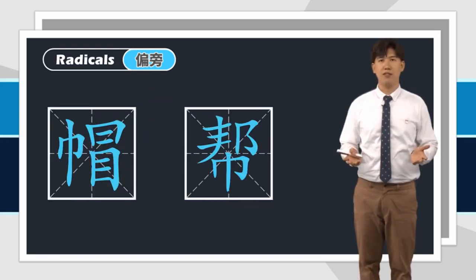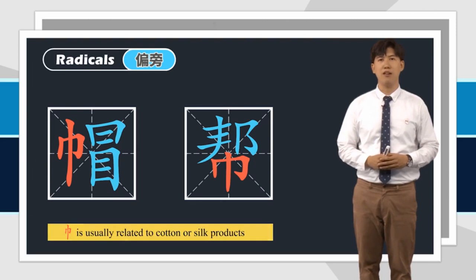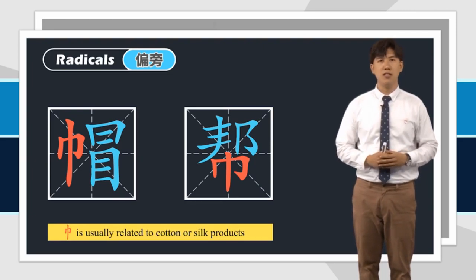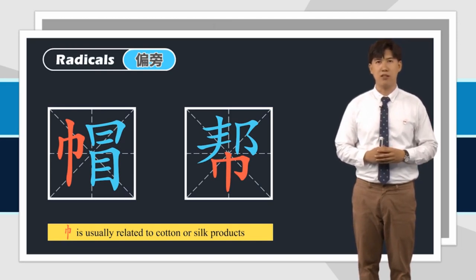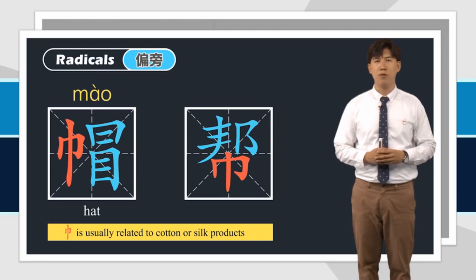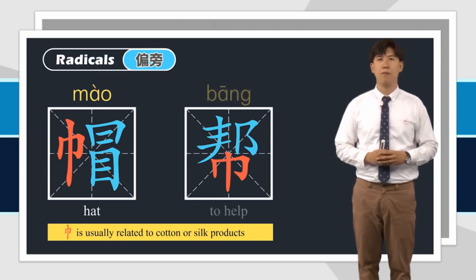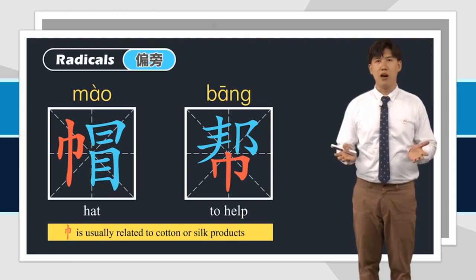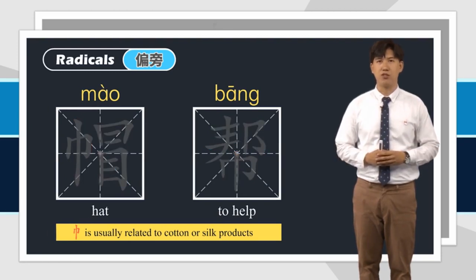The second radical is 巾字旁. 巾字旁 is usually related to cotton or silk products. 巾字旁 can appear in the left part or bottom part of a character, such as 帽 means hat, and 帮 means to help. Now let's see how to write them together and pay attention to the stroke order.